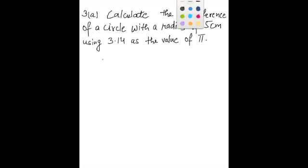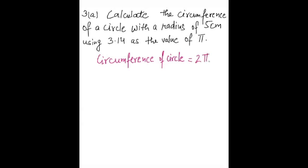So we know that the formula for circumference of a circle is equal to 2πr. We know π according to the question is 3.14 and r is 5, so the answer will be 31.4 centimeters.